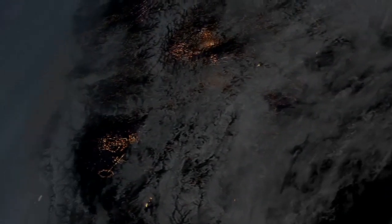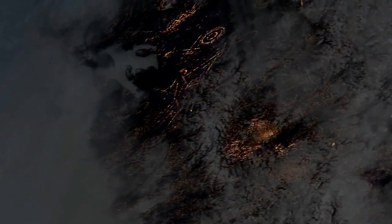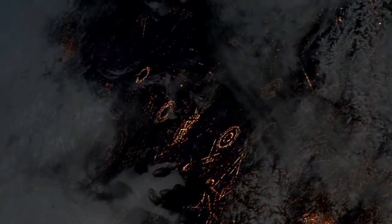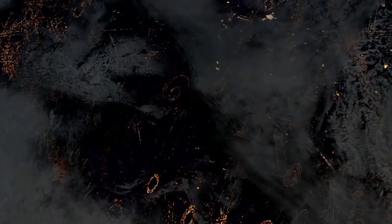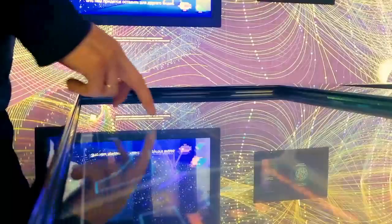Proxima Centauri B, the closest known exoplanet to our solar system, orbits in the habitable zone of its host star. The exoplanet's mass suggests a rocky exoplanet and the potential existence of liquid water on its surface remains a topic of scientific investigation.